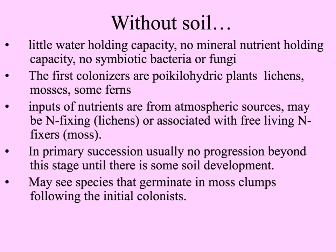When there is just a bare substrate without any soil, the ground can't hold water or nutrients. So the first colonizers are plants that can do with very little water — like lichens, mosses, and some ferns that germinate when there's a little bit of water and grow very slowly. They put nutrients into the ground, breaking up the rock a little bit, and may be nitrogen-fixing. This stage lasts a long time until some soil can develop, and then seeds germinate in the moss clumps.